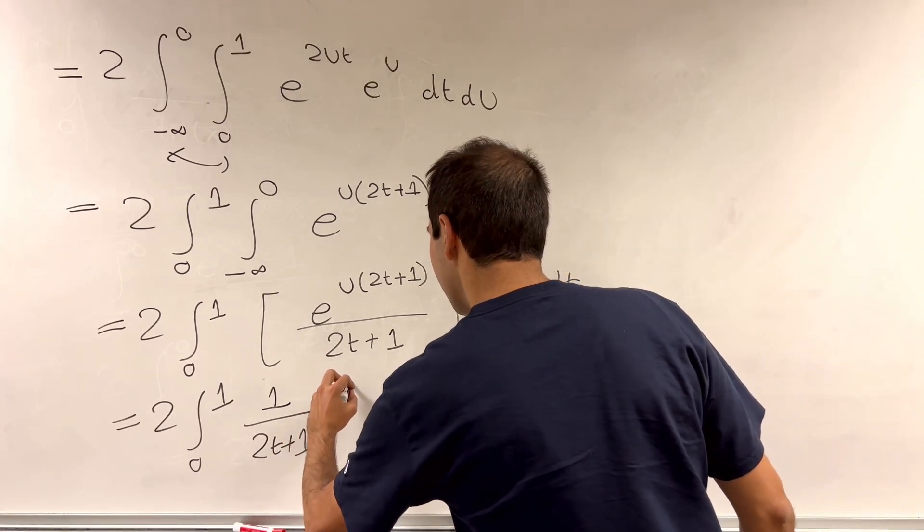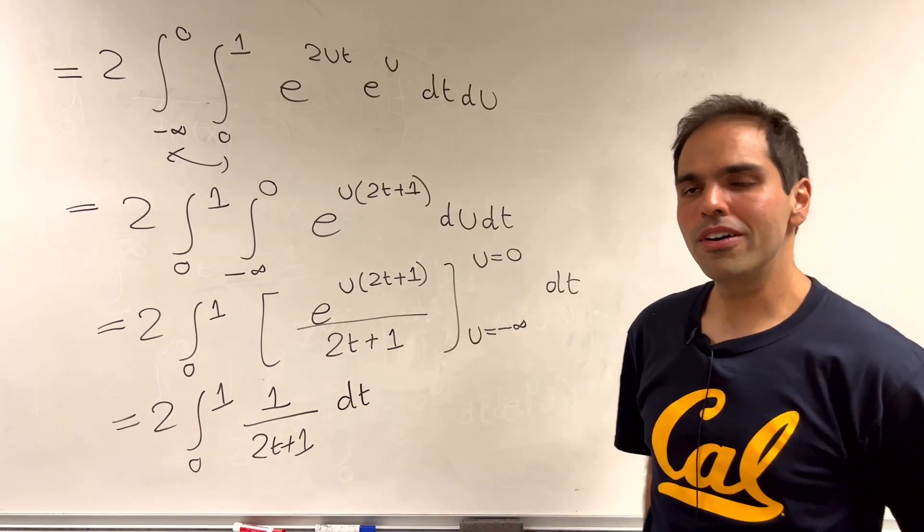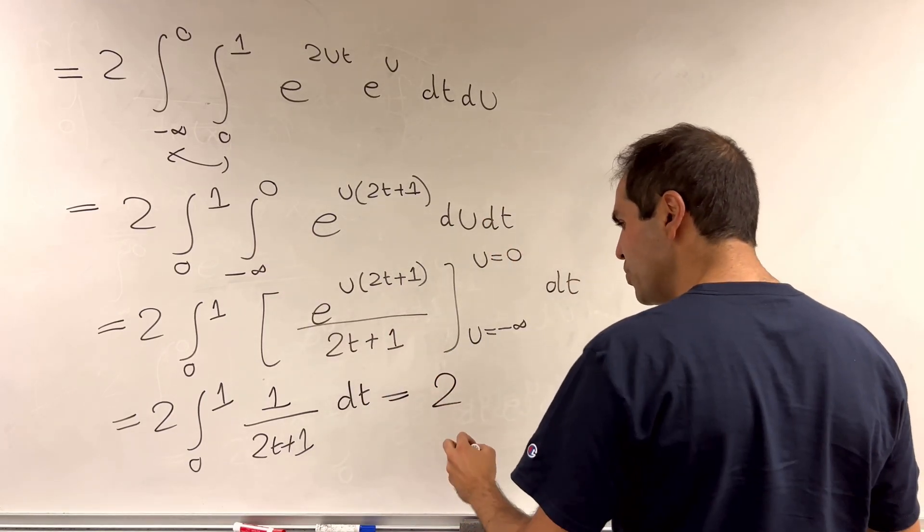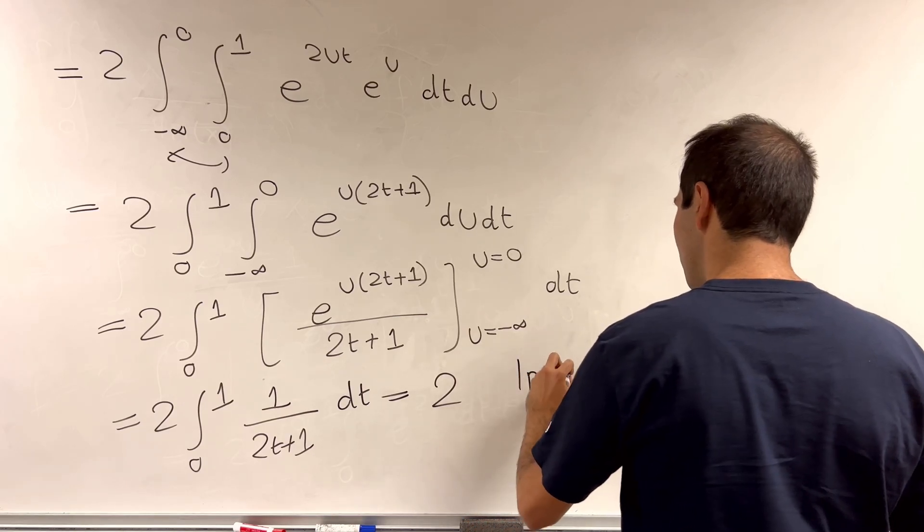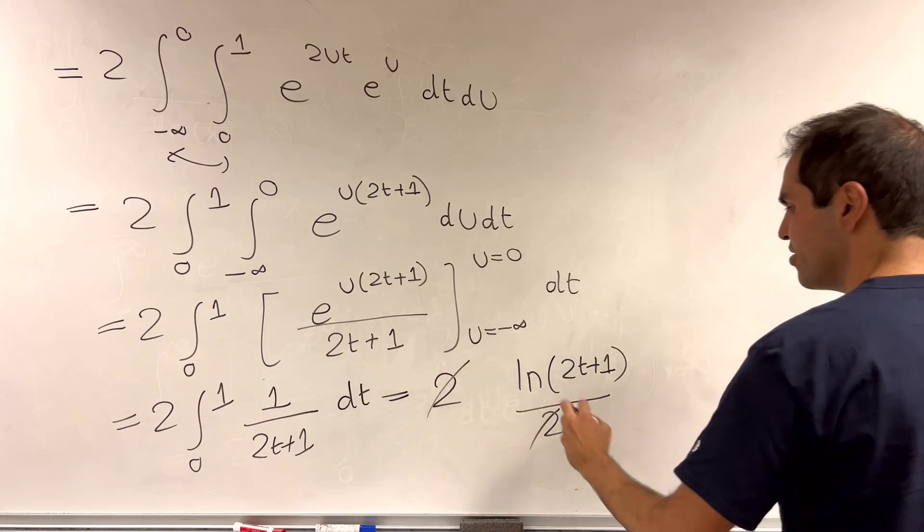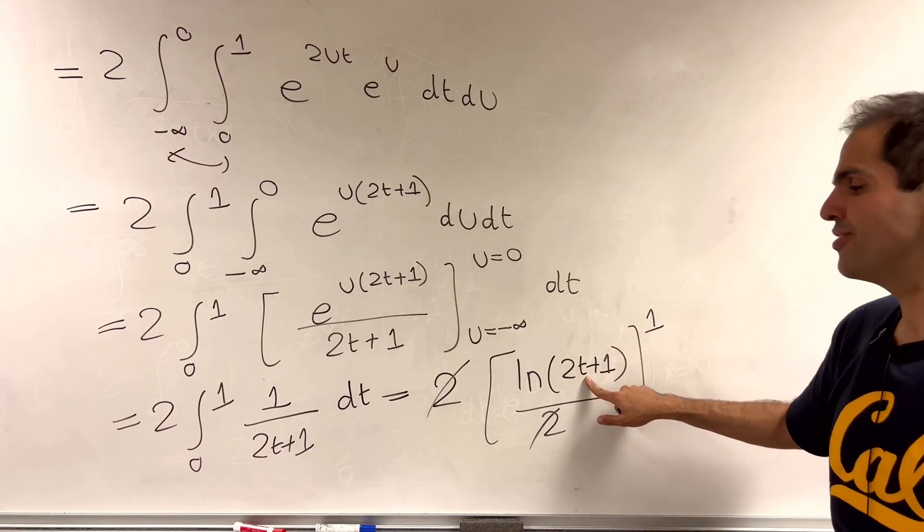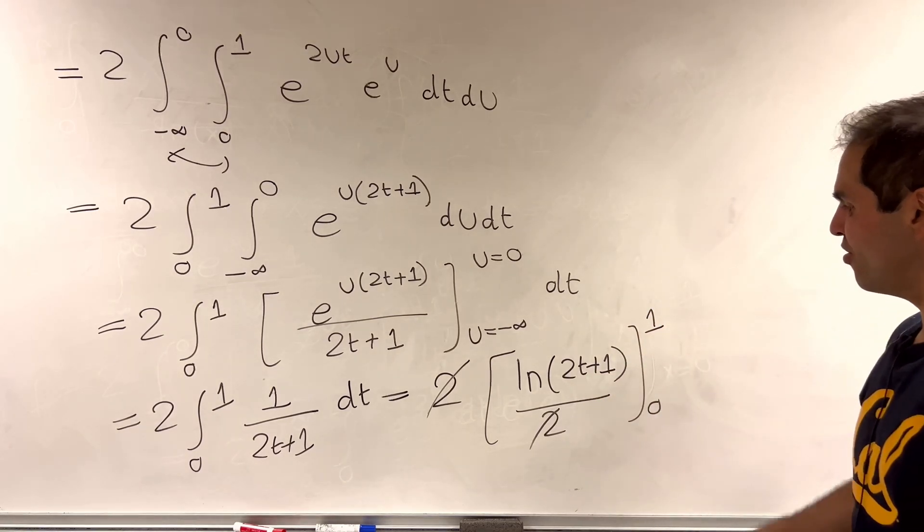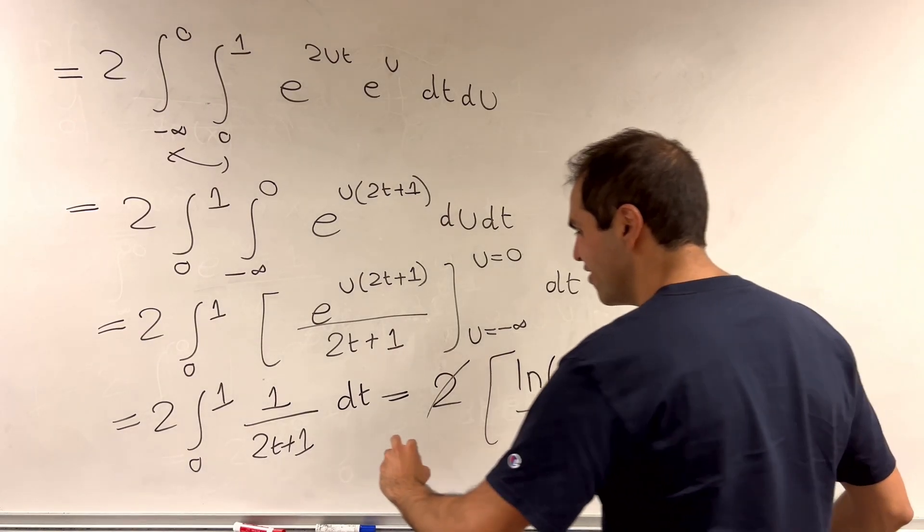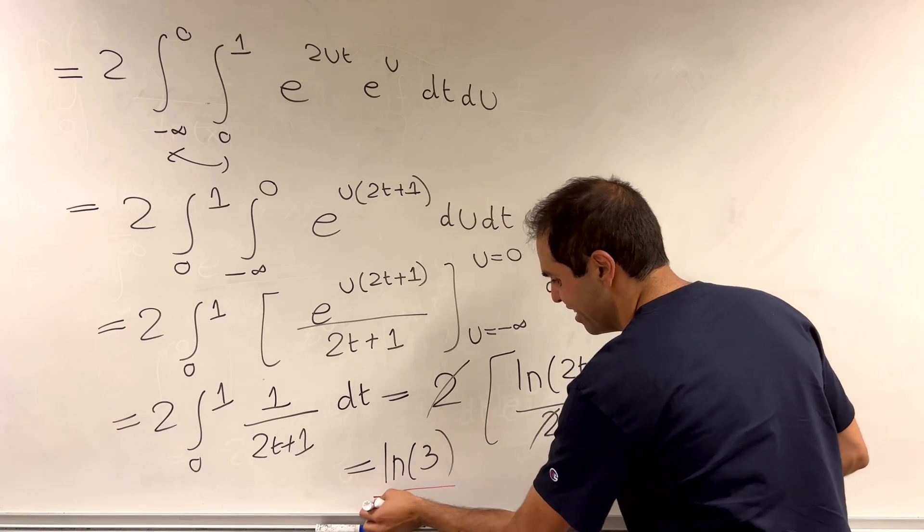And so in the end all we need to do is to integrate this function but we can again use ln so it's 2 times ln of 2t plus 1 over 2, this cancels out and you evaluate this from 0 to 1. But for t equals 1 this becomes ln of 3, at t equals 0 this becomes ln of 1 which is 0, and so just like the previous technique we still get the answer ln of 3.